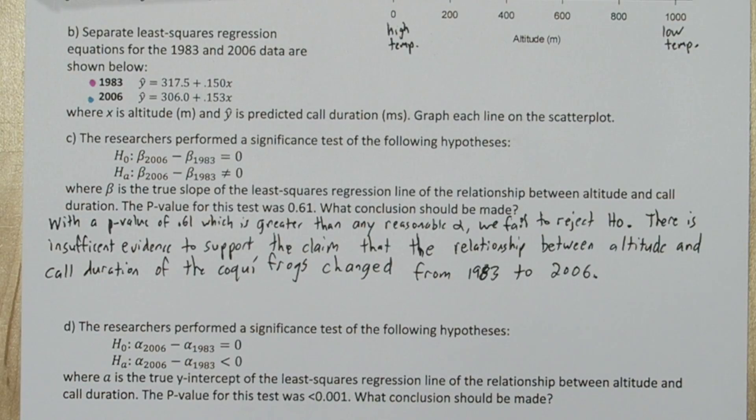Now this study used pretty large sample sizes, so the power of this significance test was quite high. So if the relationship between altitude and call duration did change between 1983 and 2006, they had a pretty good probability of detecting it with these very large sample sizes.